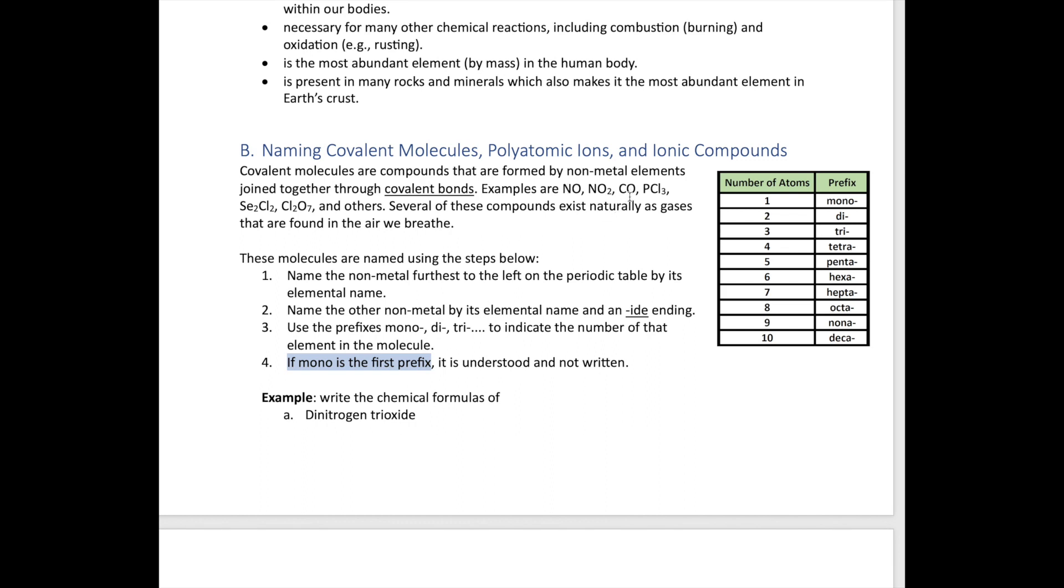So let's take a quick example here. Se2Cl2. So hopefully you've memorized your elements. You know that Se is selenium, and then Cl is chlorine. Selenium, and then chlorine. But as we said earlier, the ending of that name has to be I-D-E for the second element, so therefore this has to be changed. Instead of chlorine, it becomes chloride. That's not the end of it though. So we have to attach those prefixes. Prefix for two, which is di, so then it would be called diselenium. And then there's also two chlorine involved, so it's dichloride. So then the complete name for this is diselenium dichloride.